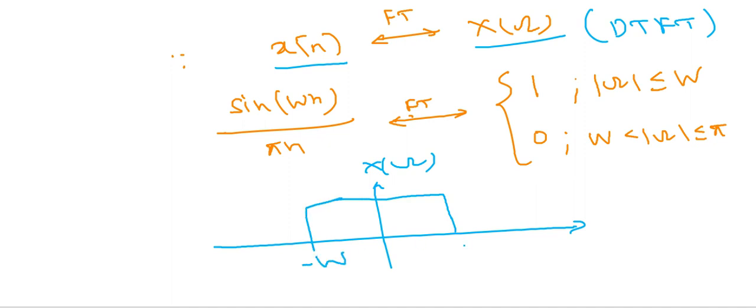So this is -ω to +ω and this is π and this is -π. So in this range it is 0 and from -ω to +ω it is 1. This amplitude is 1. So this is the DTFT of this signal x(n).